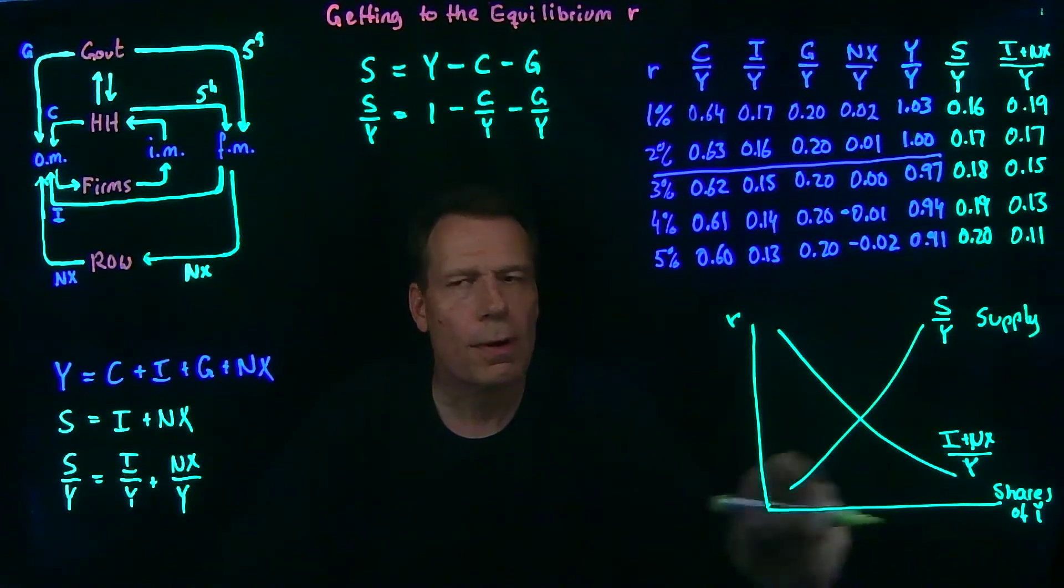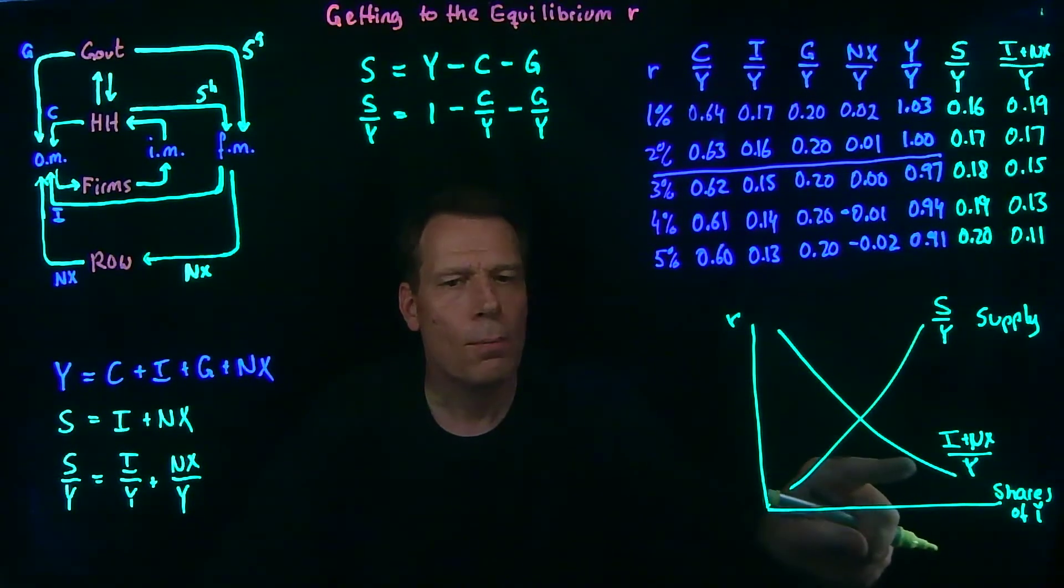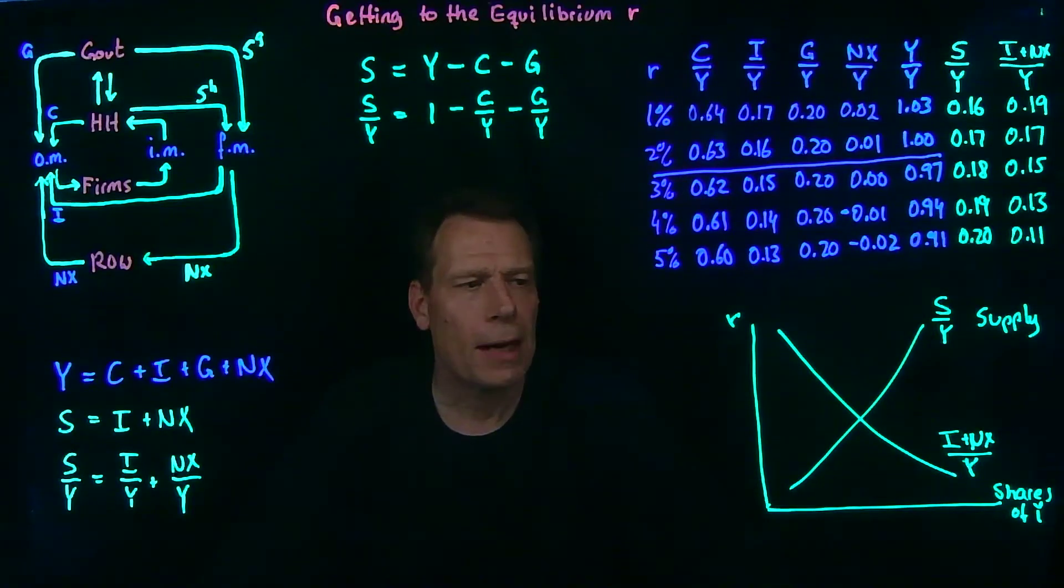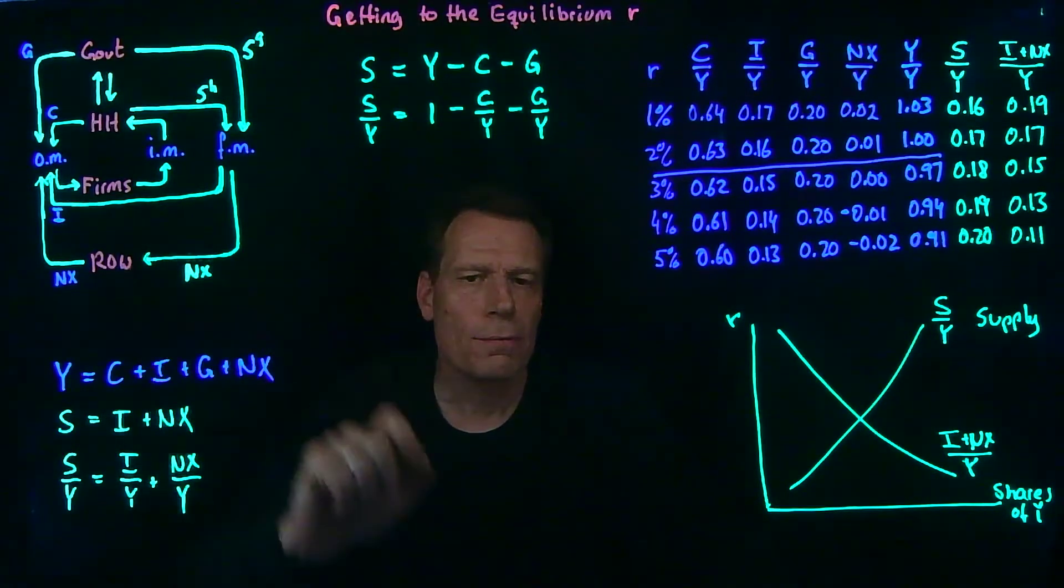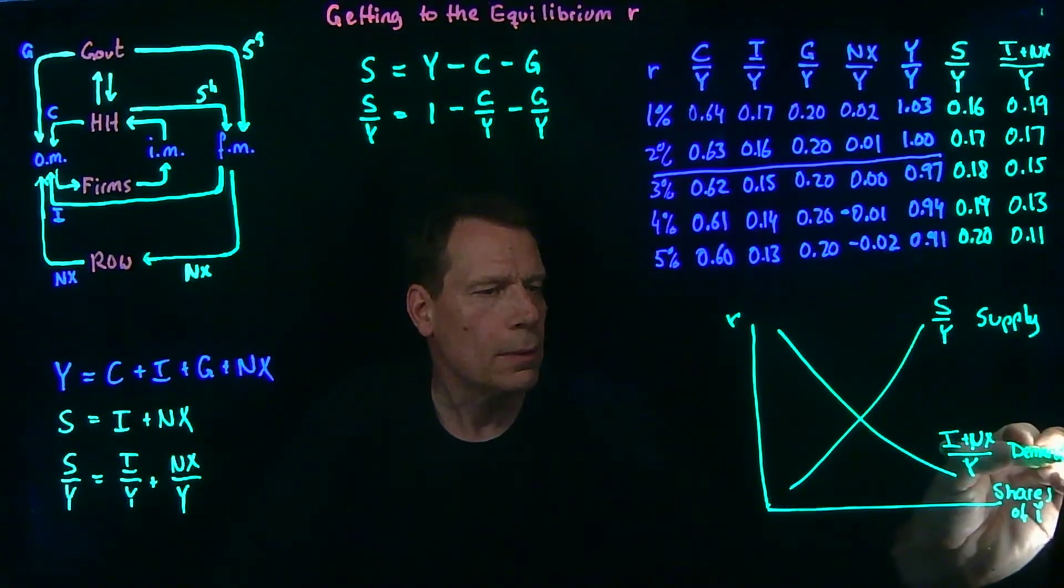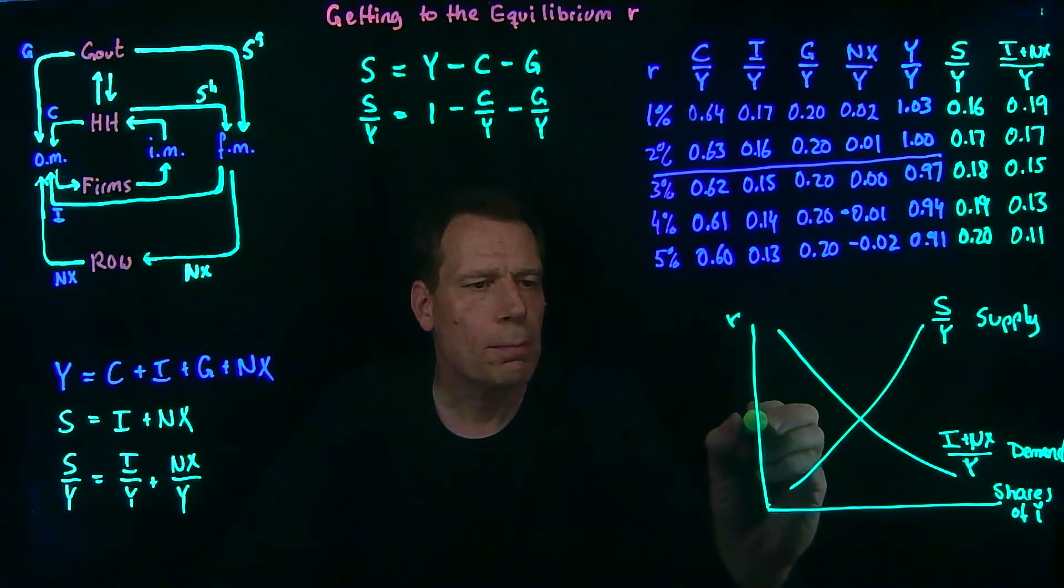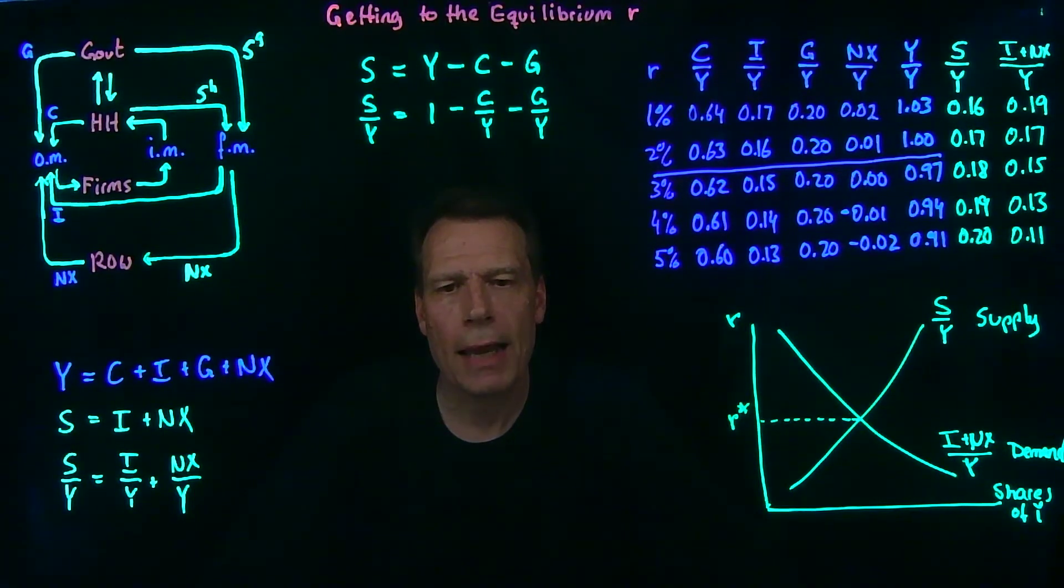This curve represents what flows out of financial markets. As the real interest rate falls, more is demanded by the rest of the world and firms. So that becomes the demand curve. And just as in any demand and supply graph, the equilibrium price, which in this case is the equilibrium real interest rate, emerges at the intersection of supply and demand.